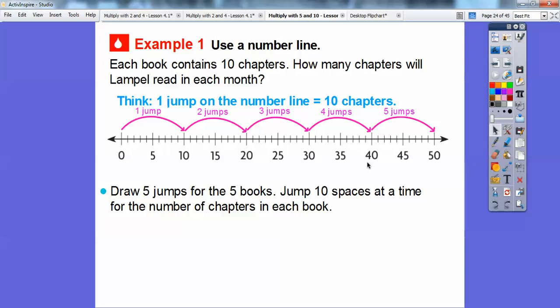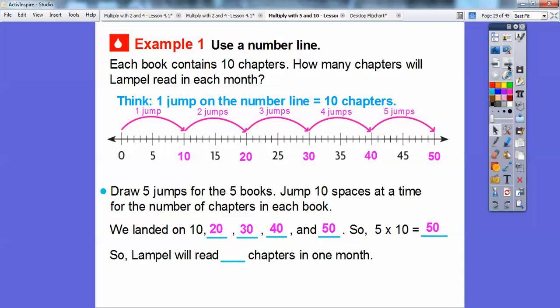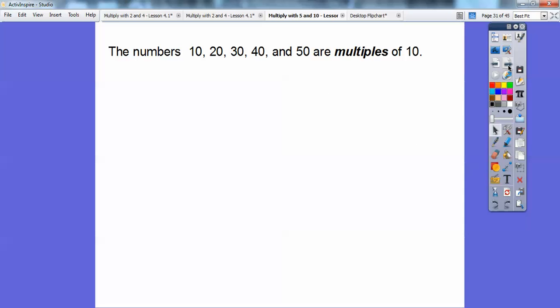Here's ten, twenty, thirty, forty, fifty. We landed on the ten, twenty, thirty, forty, fifty. So five times ten is going to be that fifty right there, and let's answer the question. Lampelle will read fifty chapters in one month. Boy, that's a lot of reading. She must like to read.